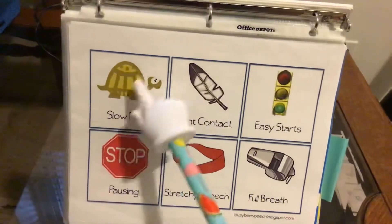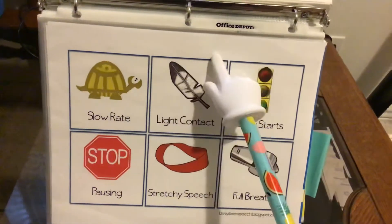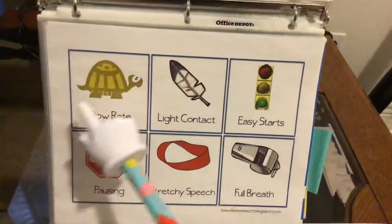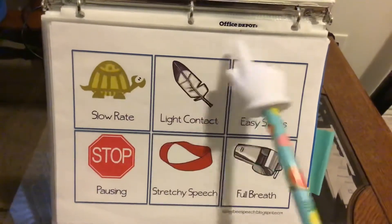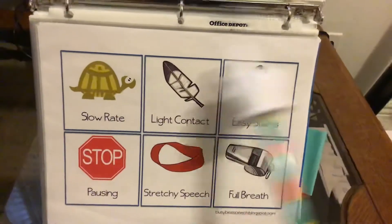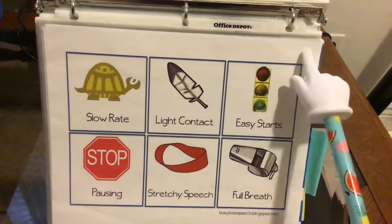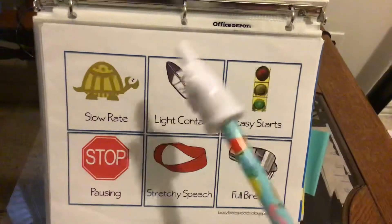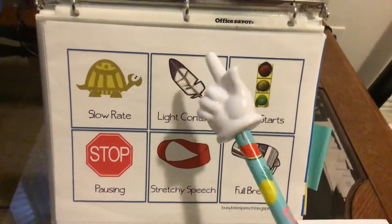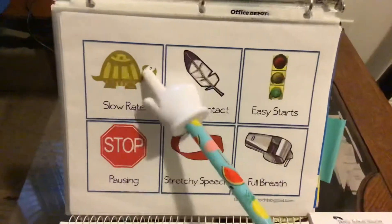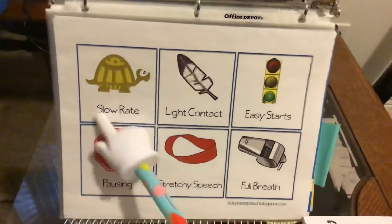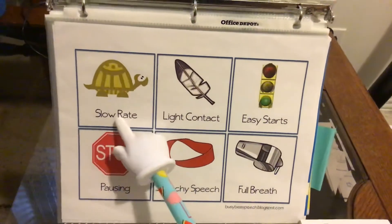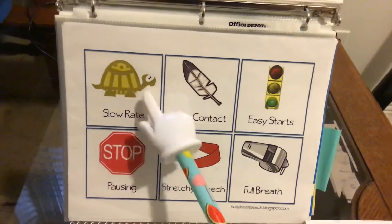If we go too fast, then we might start forgetting what we want to say or what words we want to use. And that's how we use turtle talk. So remember: slow rate — slow. When you think of slow rate, think of a turtle talking.